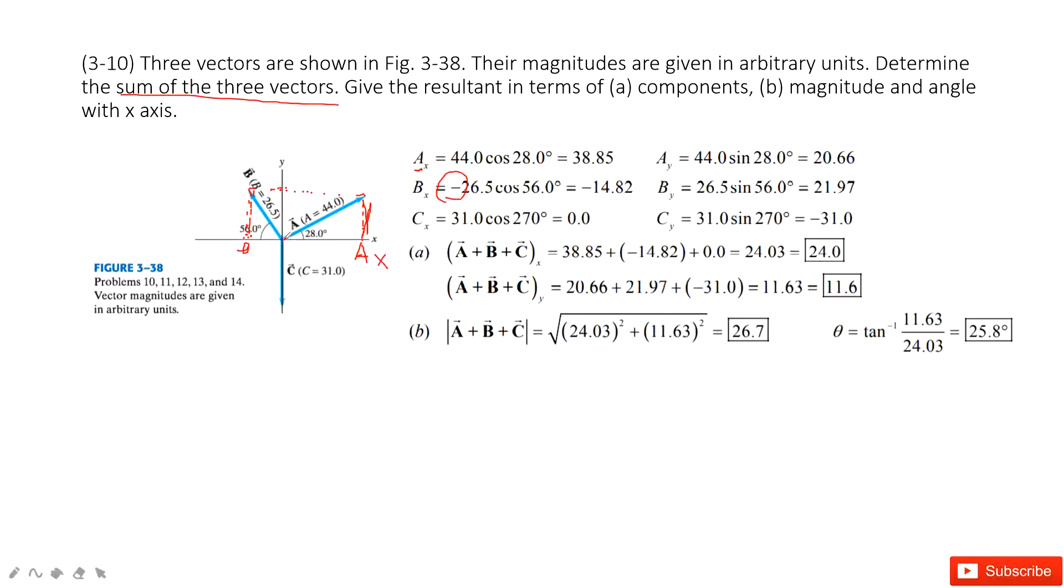And then C. When we consider C, Cx is 0 because C is in the y-direction. It goes from there to there at 270 degrees, pointing in the negative direction. So negative y-direction.